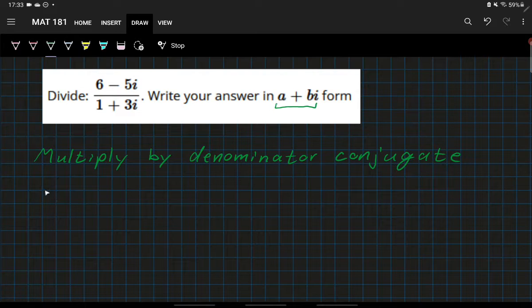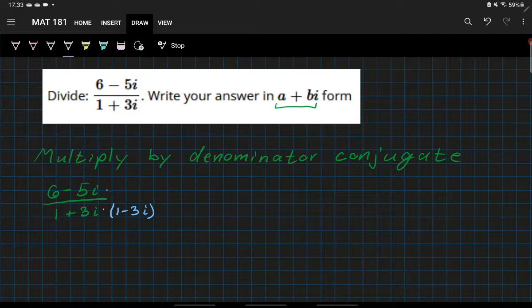So if we take what we have here, six minus five i divided by one plus three i, the conjugate of the denominator is one minus three i. So we multiply by one minus three i in the denominator, and then we do that in the numerator as well to keep everything equal.